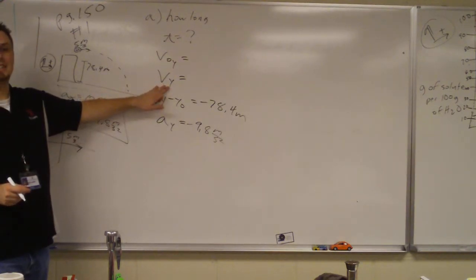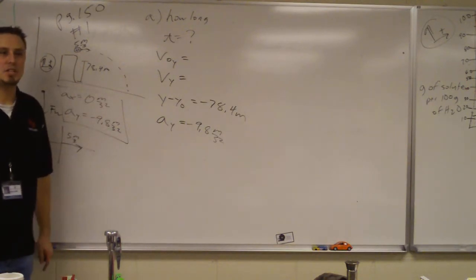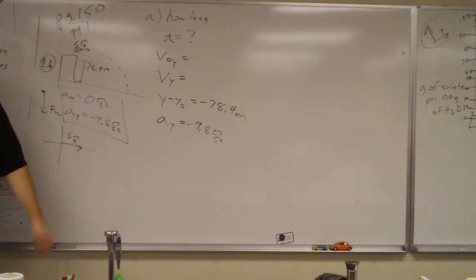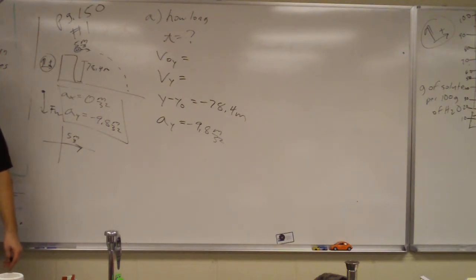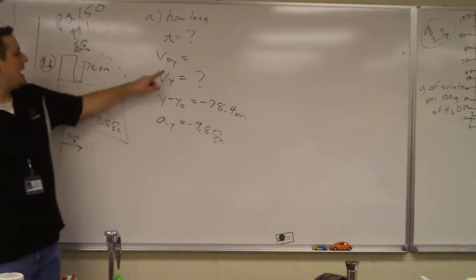This is final velocity in the y, meaning right before we hit the ground. Right before we hit the ground in the y direction, some of you will want to say zero. Is it zero in the y direction right before it hits the ground? No. In fact, it's its biggest value. So I don't know what that is. I just know it's not zero.